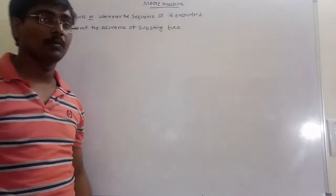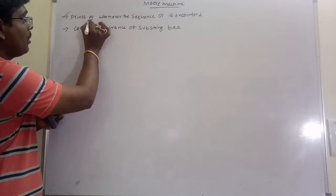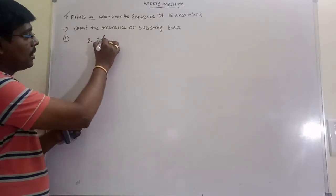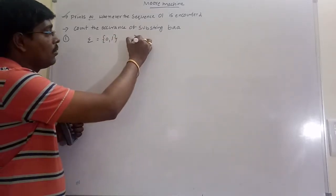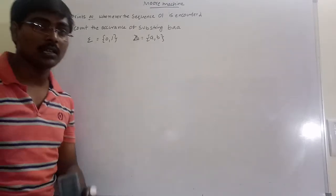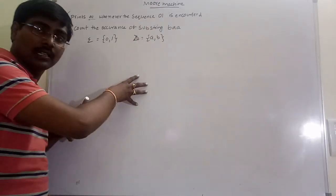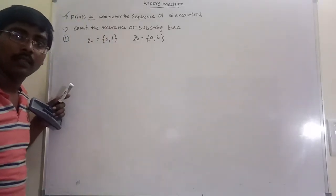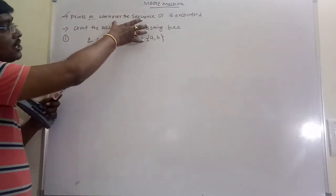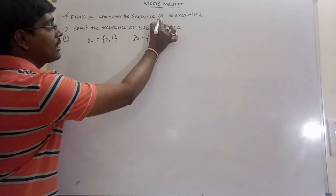Hi friends, in this session we will discuss two examples of how to construct a Moore machine. The first example is: construct a Moore machine for output 'a' whenever the sequence 0-1 is encountered. If inputs are 0 and 1, the output symbols are a and b. Whenever the sequence 0-1 occurs in the finite automata, it produces output 'a'; otherwise the output is 'b'. First, construct a DFA that satisfies this condition, then write the outputs.